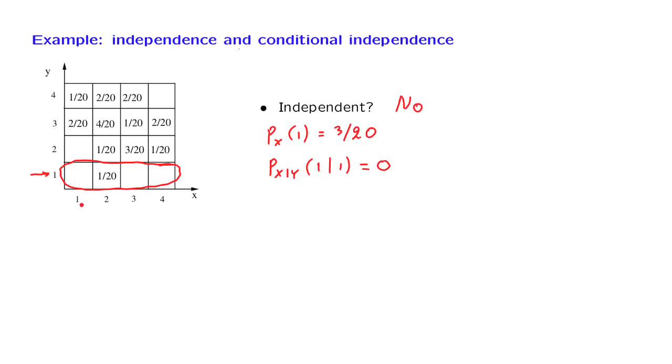Now, when we first introduced the notion of independence some time ago, we also introduced the notion of conditional independence. And we said that conditional independence is the same as ordinary independence, except that it would be applied to a conditional universe. Something similar can be done for the case of random variables as well.